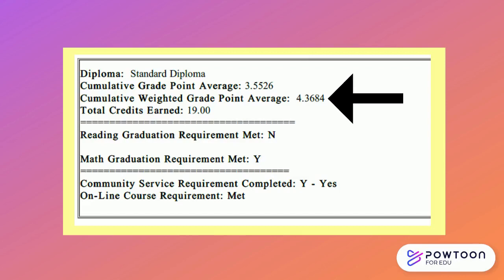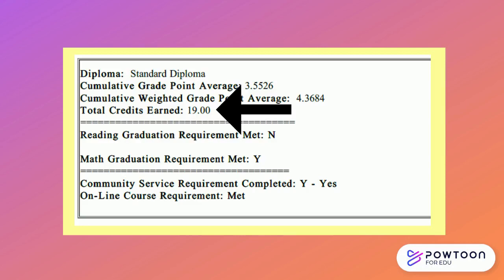Below this you will see your weighted GPA. This is the average that includes weighting for rigorous coursework such as honors, AP, or ACE courses. Next is the total credits earned — currently this student has 19 credits. Roughly you should earn seven credits for every year you are in high school. Keep in mind you earn half a credit for each semester you complete, so you haven't earned any credits yet for this year.